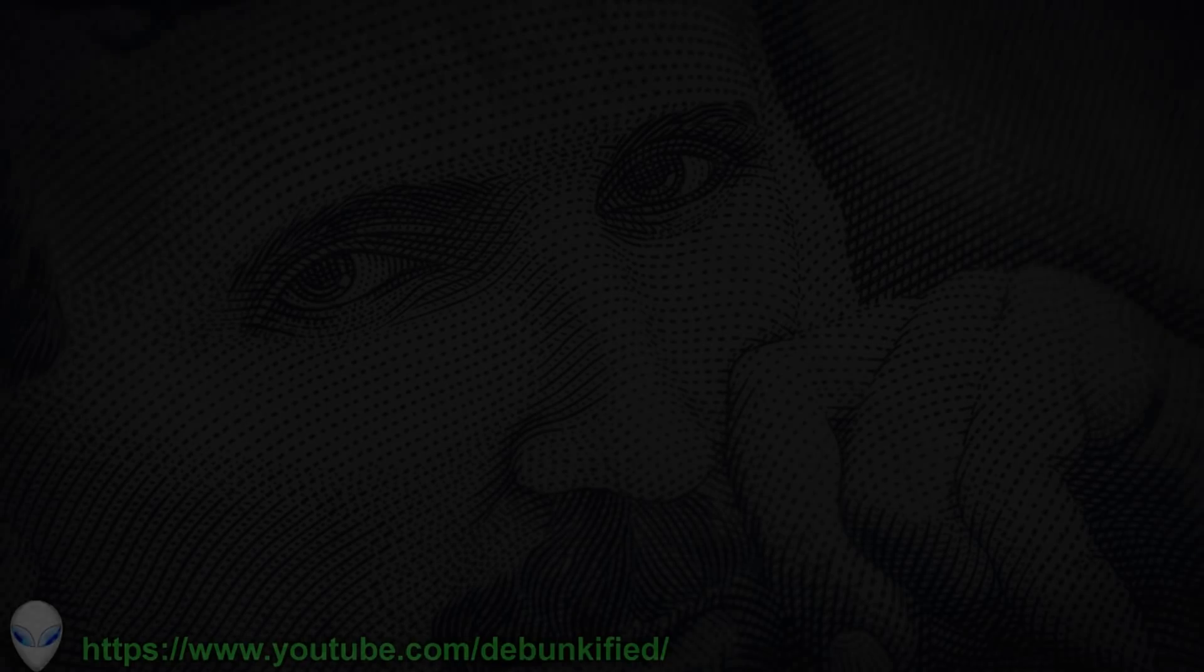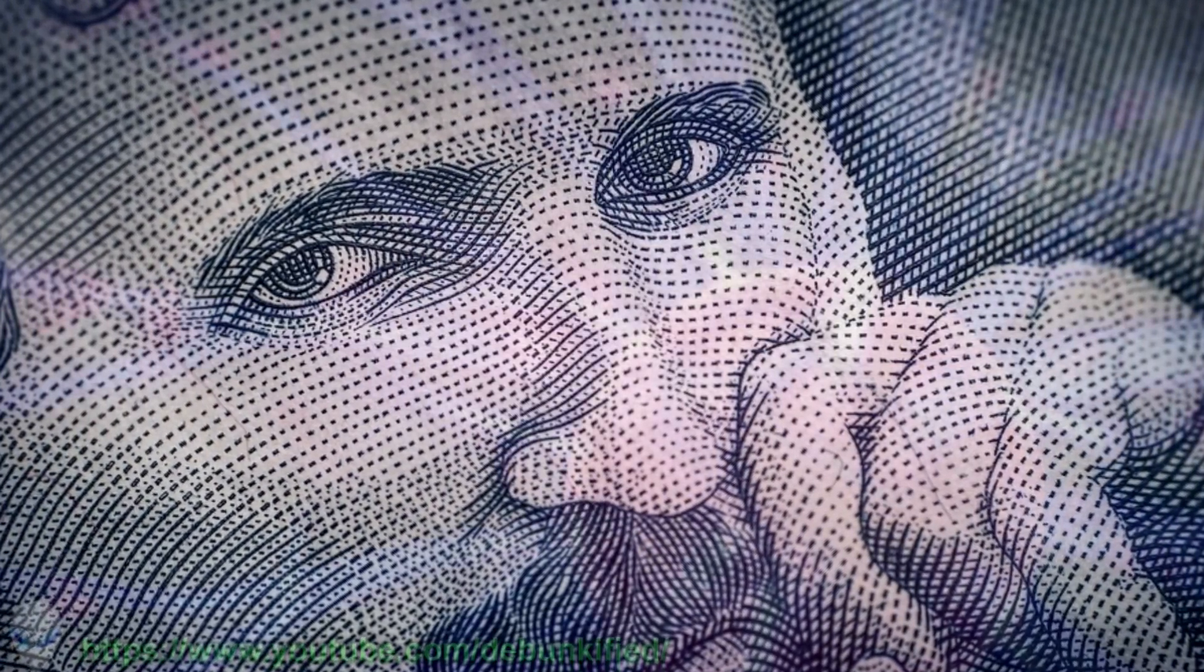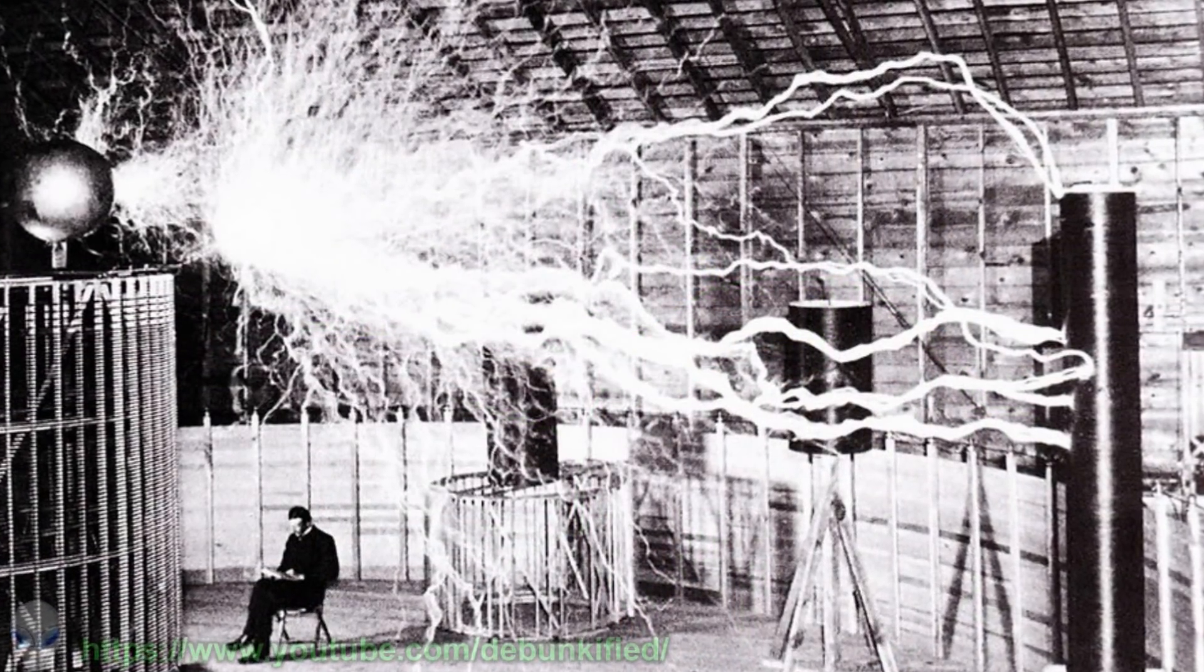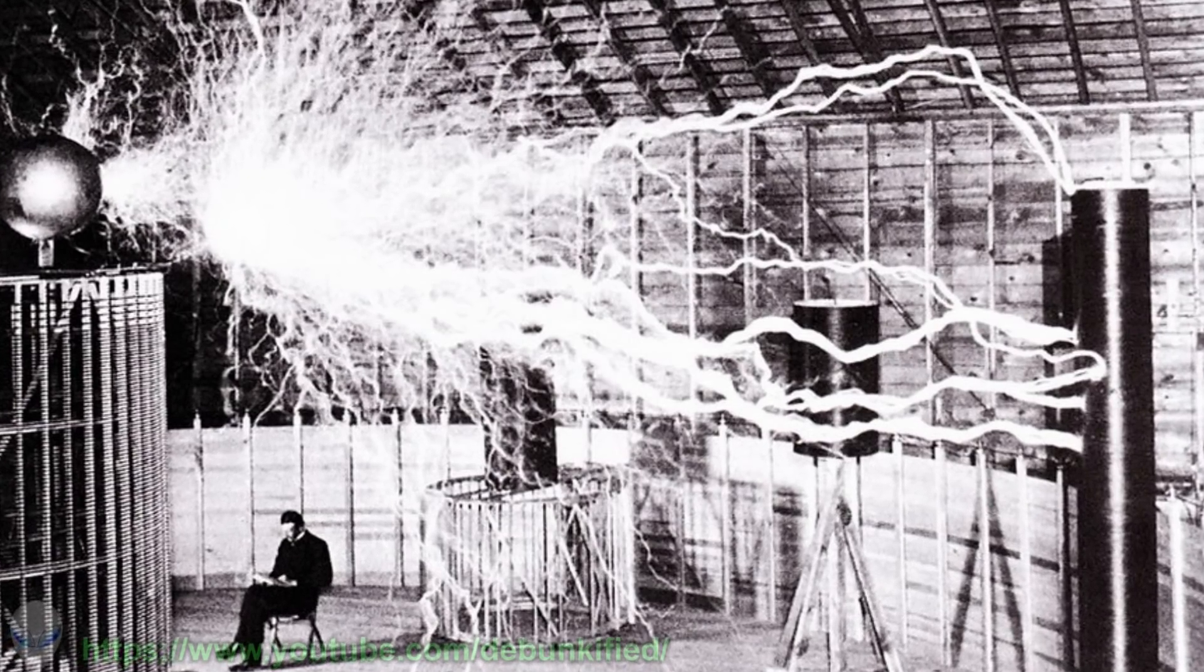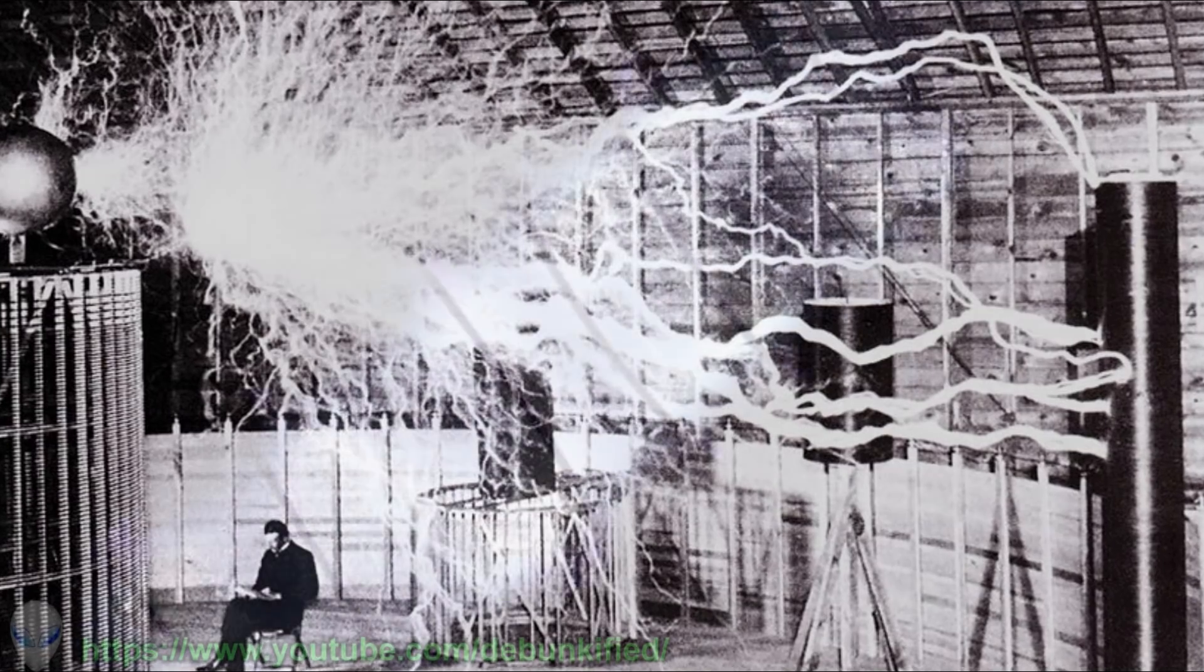Nikola Tesla originally invented the once popular 1980s novelty item, the plasma globe, while experimenting with high voltage and high frequency currents in a tube with the air vacuumed out of it for studying purposes. He called it an inert gas discharge tube.